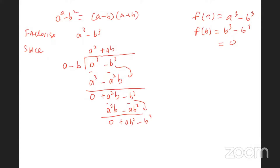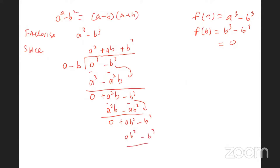Next step: a into ab squared — the a's cancel and you get b squared. Multiply back: b squared times a is ab squared, and b squared times (minus b) is minus b cubed. So the long division is complete.